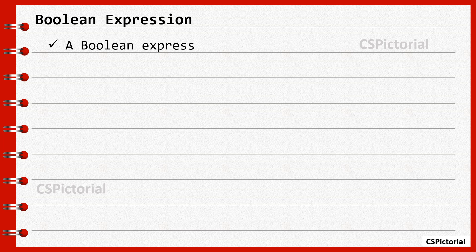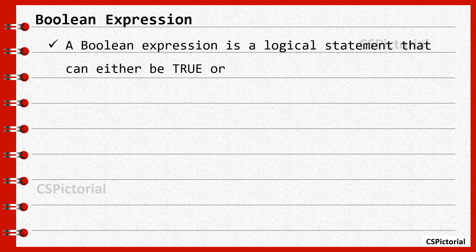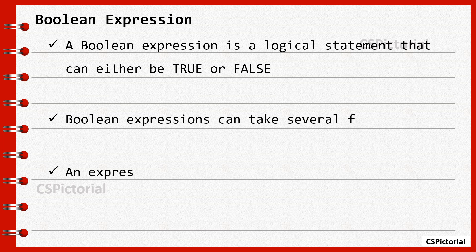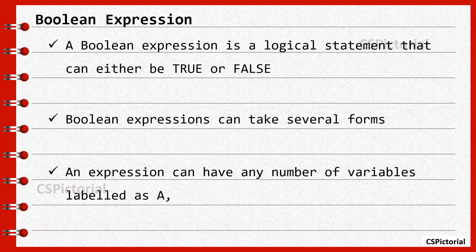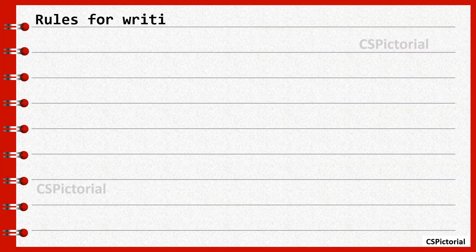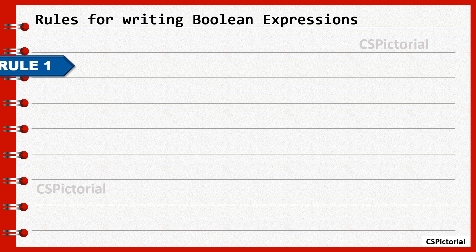A Boolean expression is a logical statement that can either be true or false. It can take several forms and it can have any number of variables. There are specific rules to write a Boolean expression. We will check them out one by one.